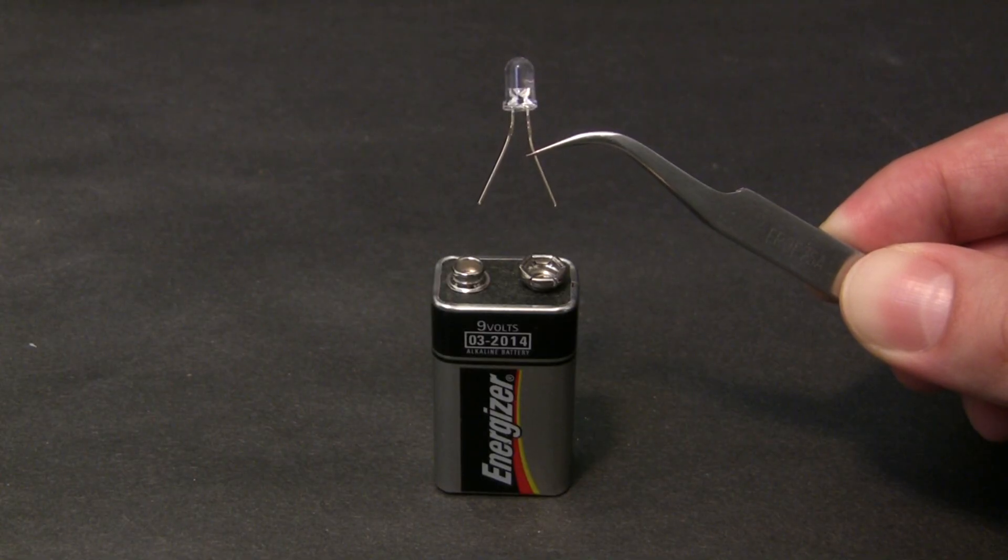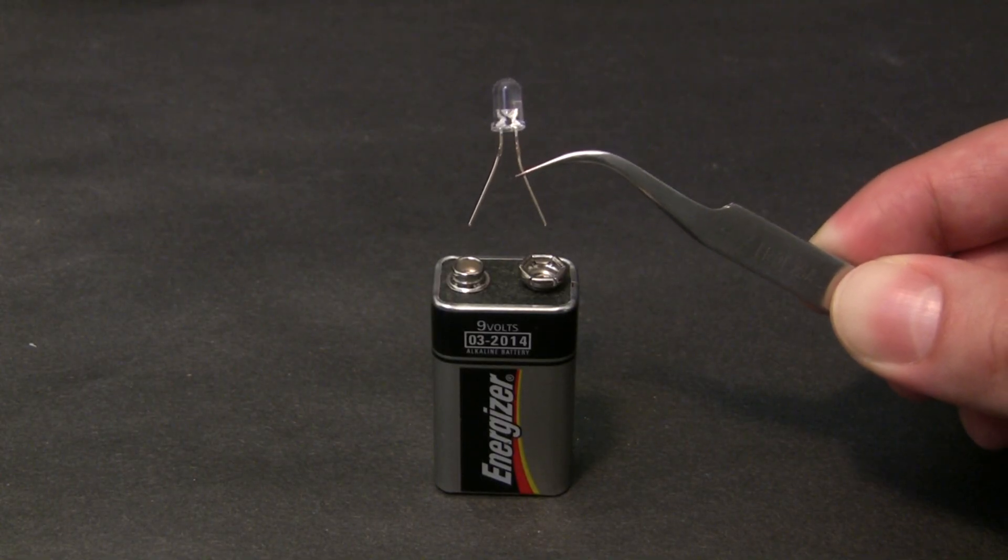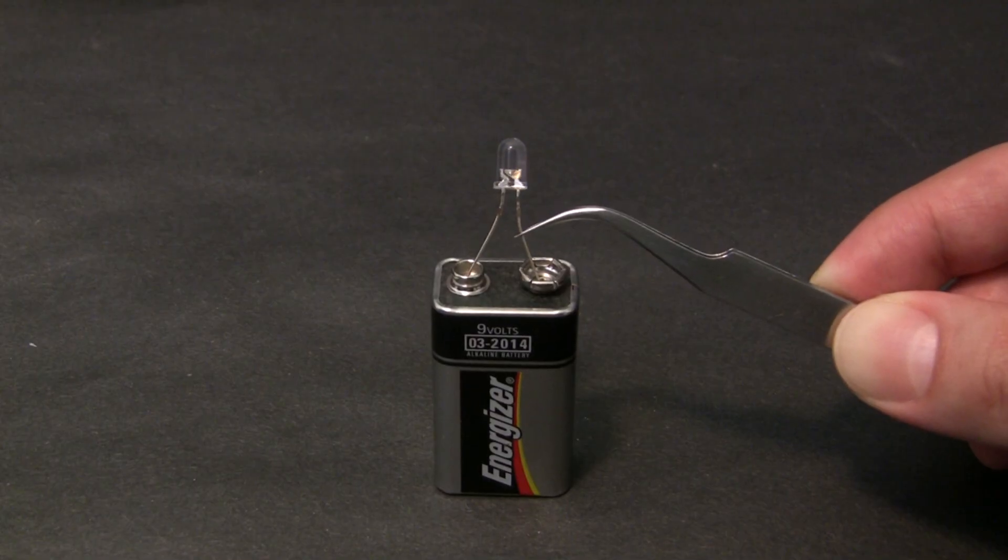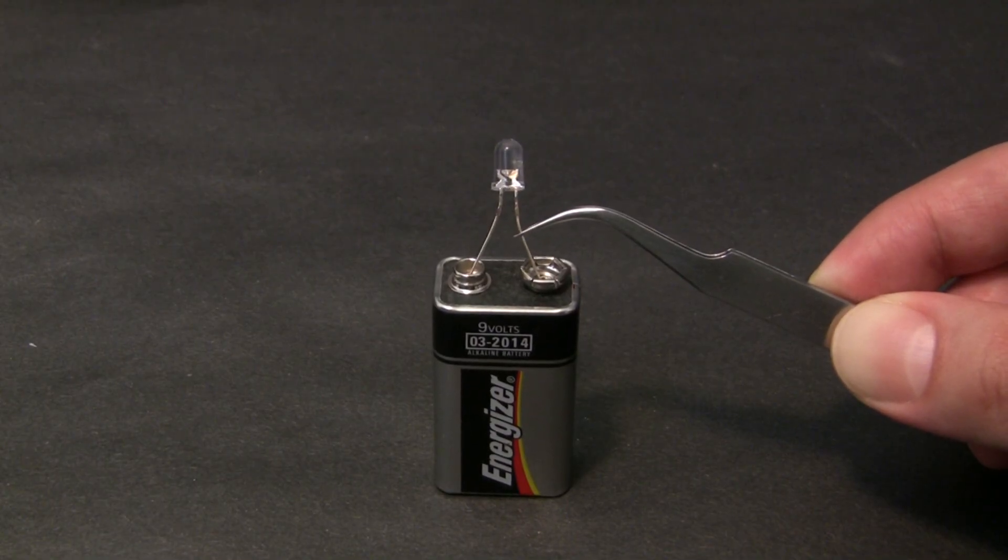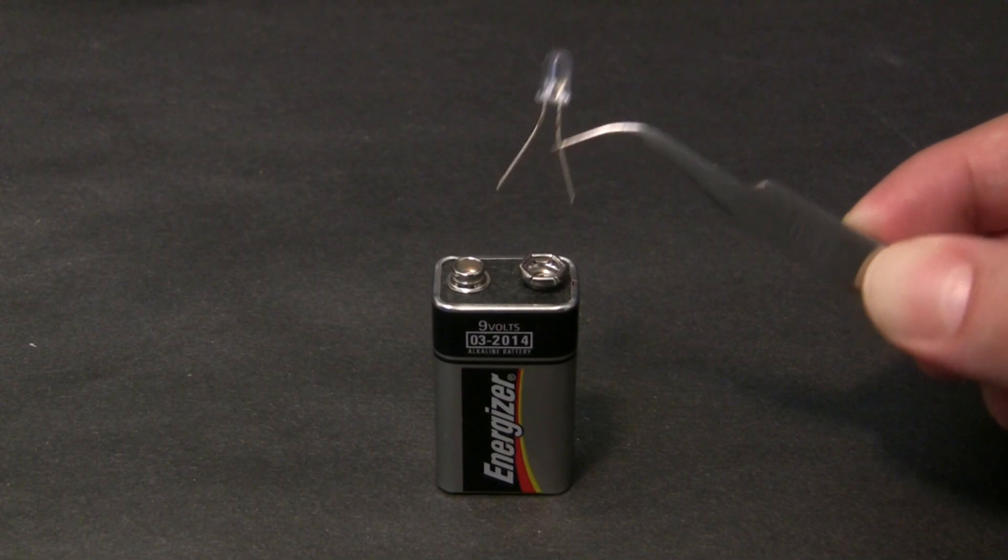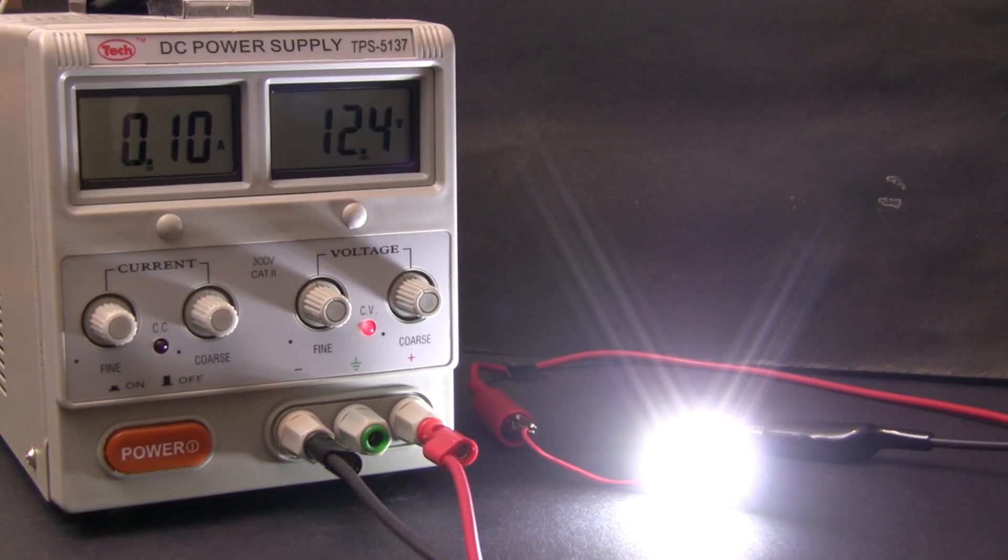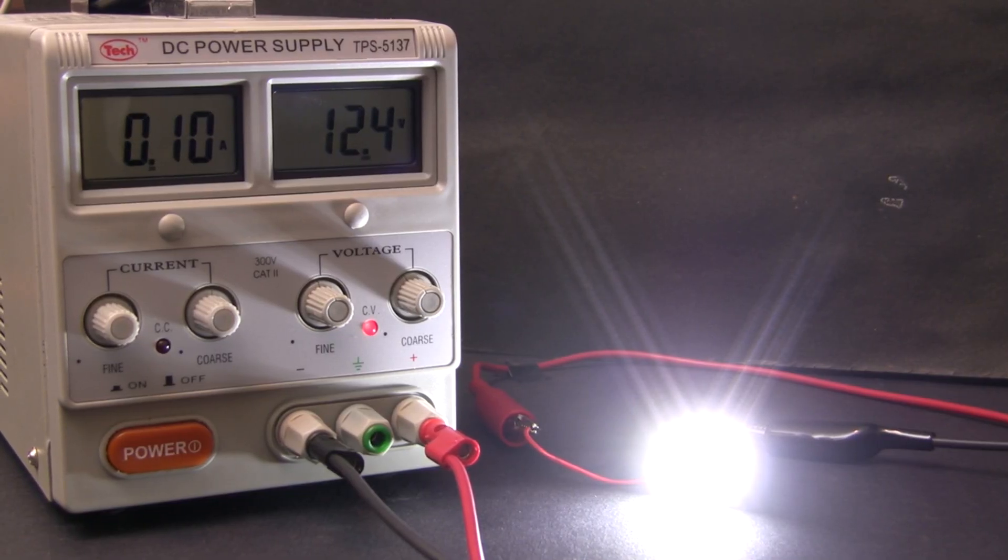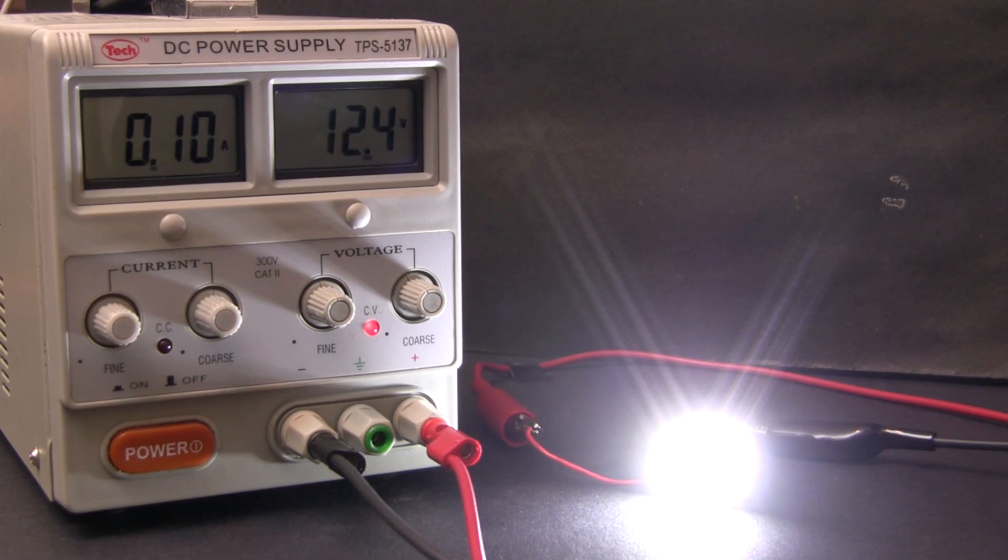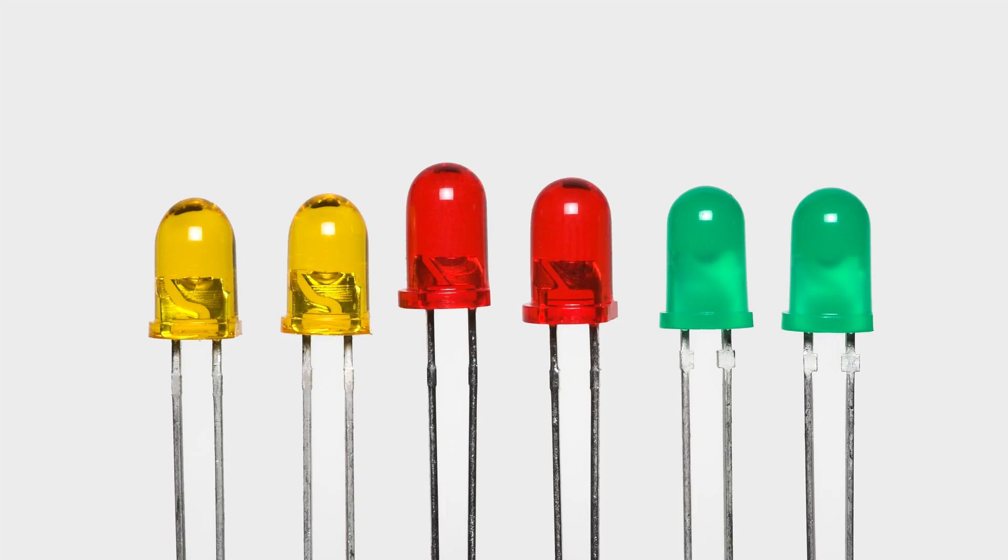Now you see why in my video on voltage, a 9 volt battery was enough to instantaneously kill an LED. There needs to be something to limit the amount of current to a safe value. The current rating on every LED will be different. For example, this high powered LED module can easily handle 100 milliamps, but in general the standard 5mm LEDs that you're going to be playing with at home are rated for 20 milliamps.